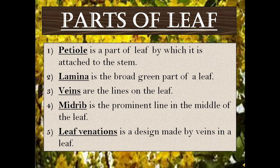There are five parts of a leaf: petiole, lamina, veins, midrib, and leaf venation. A petiole is the part of a leaf by which it is attached to the stem. Lamina is the broad green part of the leaf. Veins are the lines on the leaf. Midrib is the prominent line in the middle of the leaf. Leaf venation is a design made by the veins on the leaf.